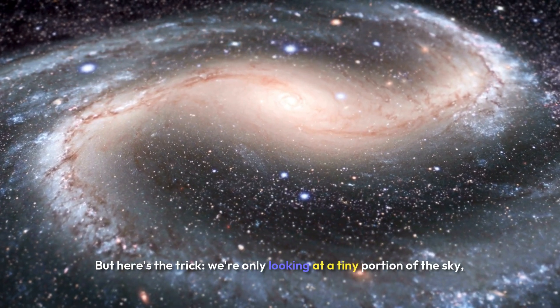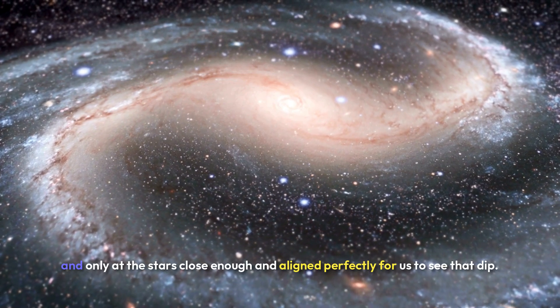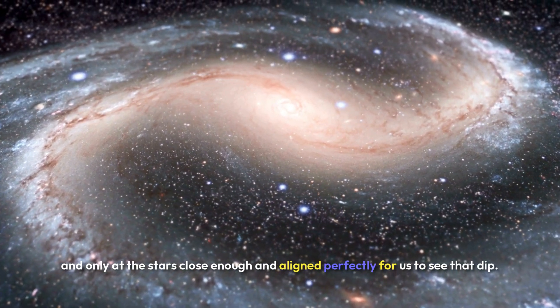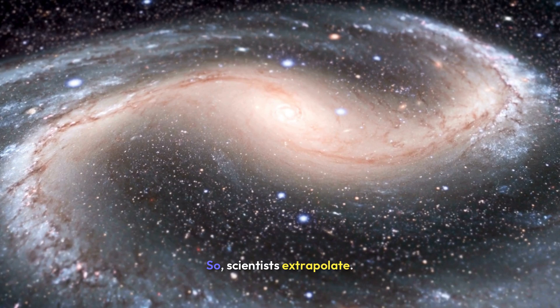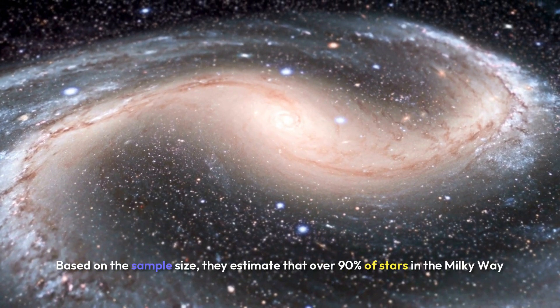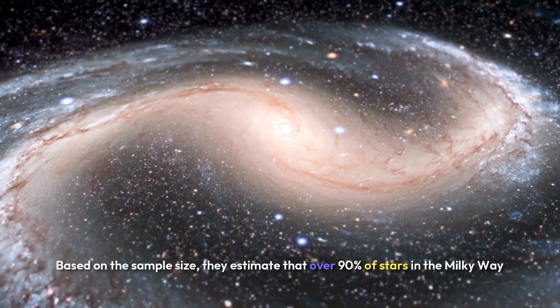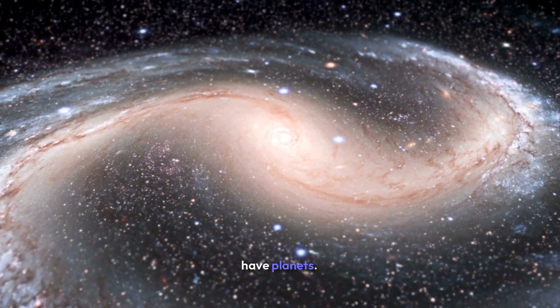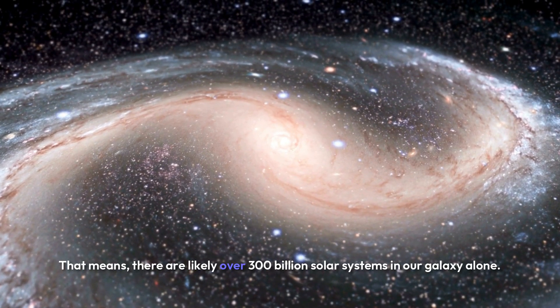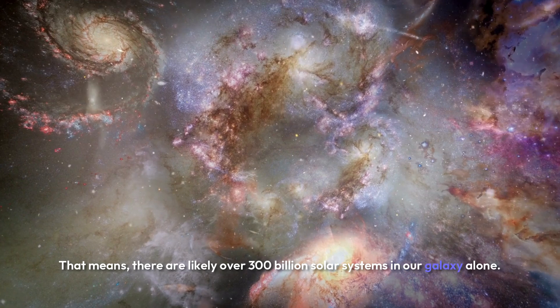But here's the trick. We're only looking at a tiny portion of the sky, and only at the stars close enough and aligned perfectly for us to see that dip. So, scientists extrapolate. Based on the sample size, they estimate that over 90% of stars in the Milky Way have planets. That means there are likely over 300 billion solar systems in our galaxy alone.